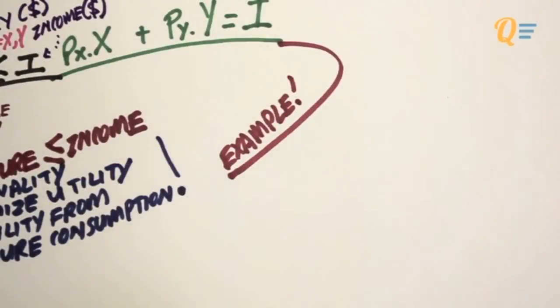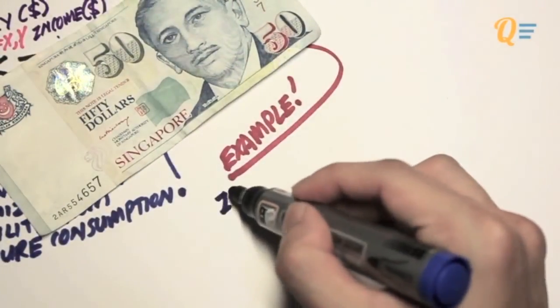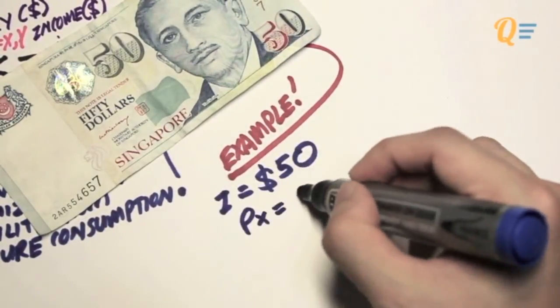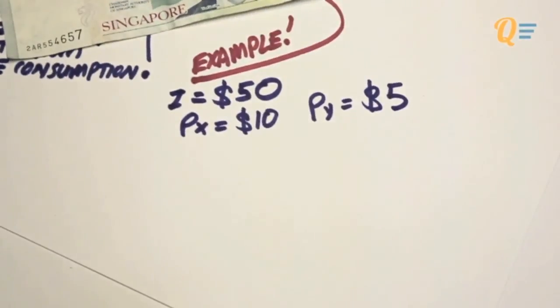Let me give you an example of how the budget constraint might work in real life. I'm just going to take out my wallet, and I realize that I have got $50 in my pocket. I'm just going to take it that my income is $50, the price of good X is $10, and the price of good Y is $5.